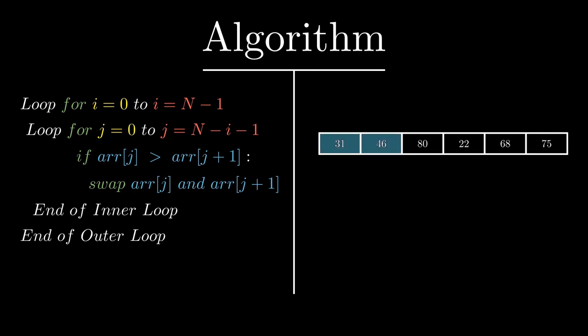In the second iteration we compare 46 and 80 — 46 is less than 80, so we don't need to swap. In the third iteration we compare 80 and 22 — 80 is greater than 22, so we swap these values. In the fourth iteration we compare 80 and 68 — 80 is greater than 68, so we swap. In the fifth iteration we compare 80 and 75 — 80 is greater than 75, so we swap as well.